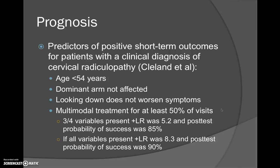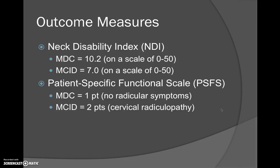Prognosis: the following are predictors for positive short-term outcomes for patients with a clinical diagnosis of cervical radiculopathy, according to Cleland et al. They are: less than 54 years old, dominant arm not affected, looking down does not worsen symptoms, and having received multimodal treatment for at least 50% of their visits. If three out of four variables are present, the positive likelihood ratio is 5.2 and post-test probability of success is 85%. If all four variables are present, the positive likelihood ratio is 8.3 and post-test probability of success is 90%.